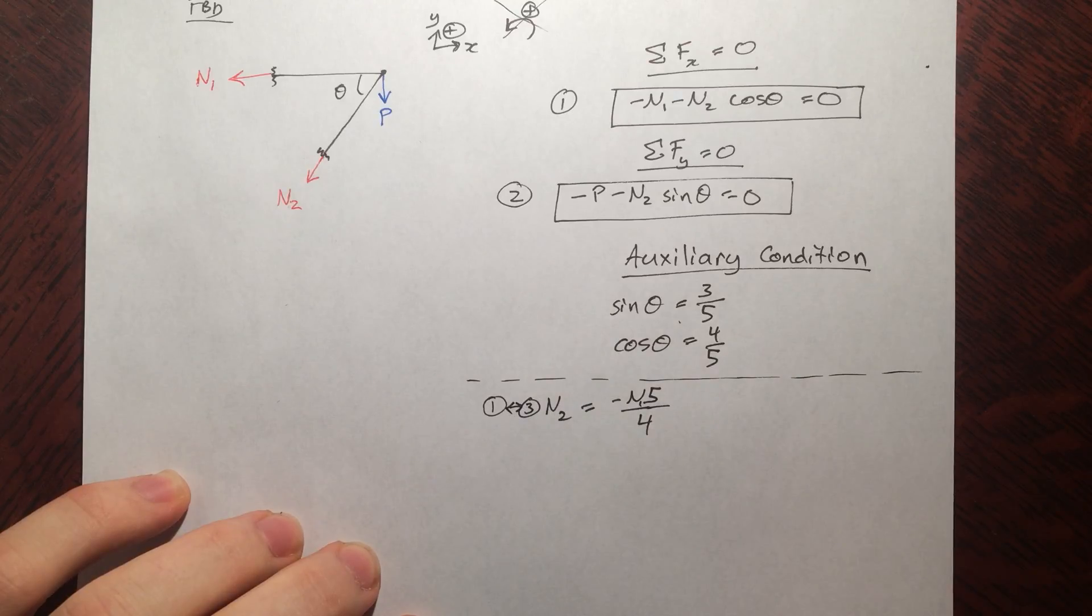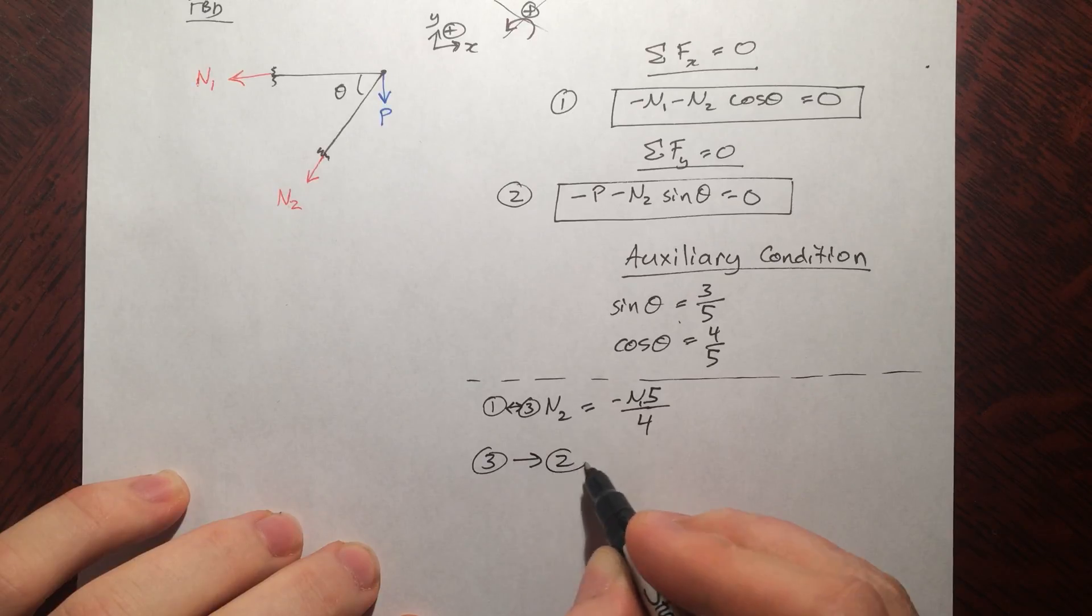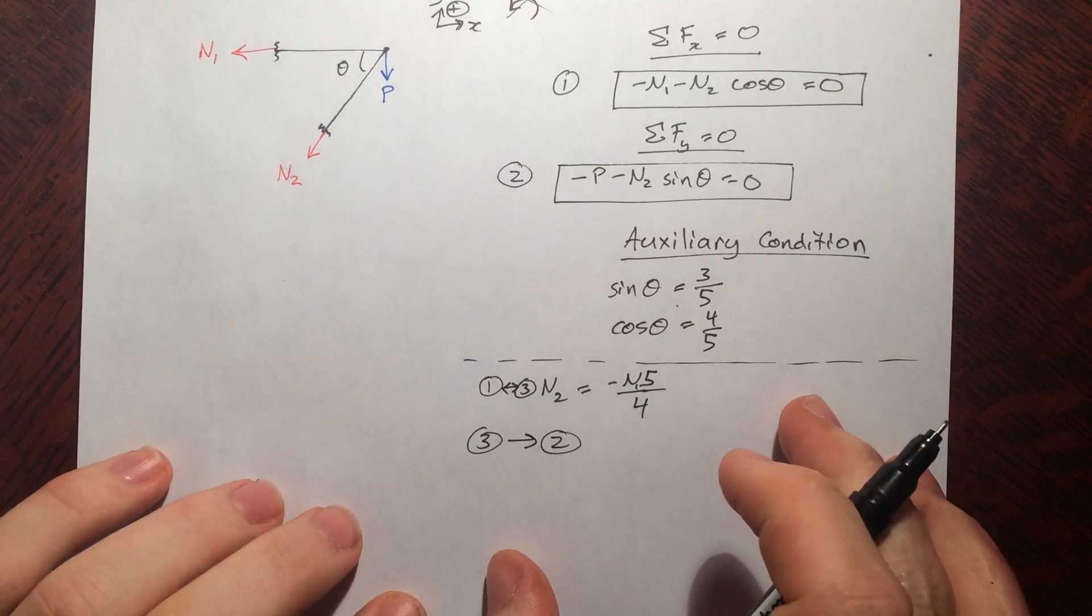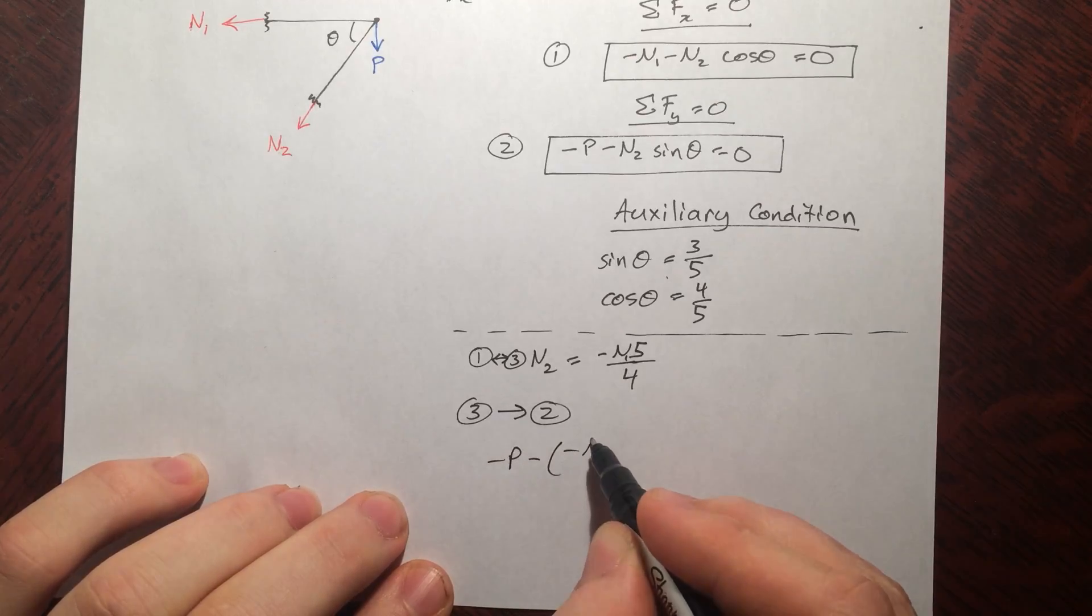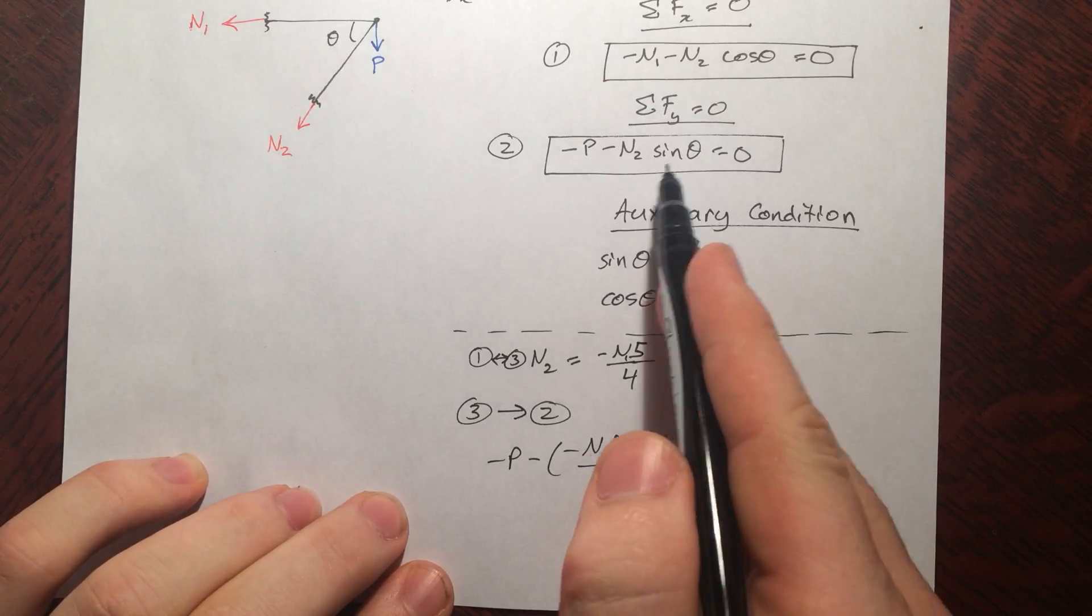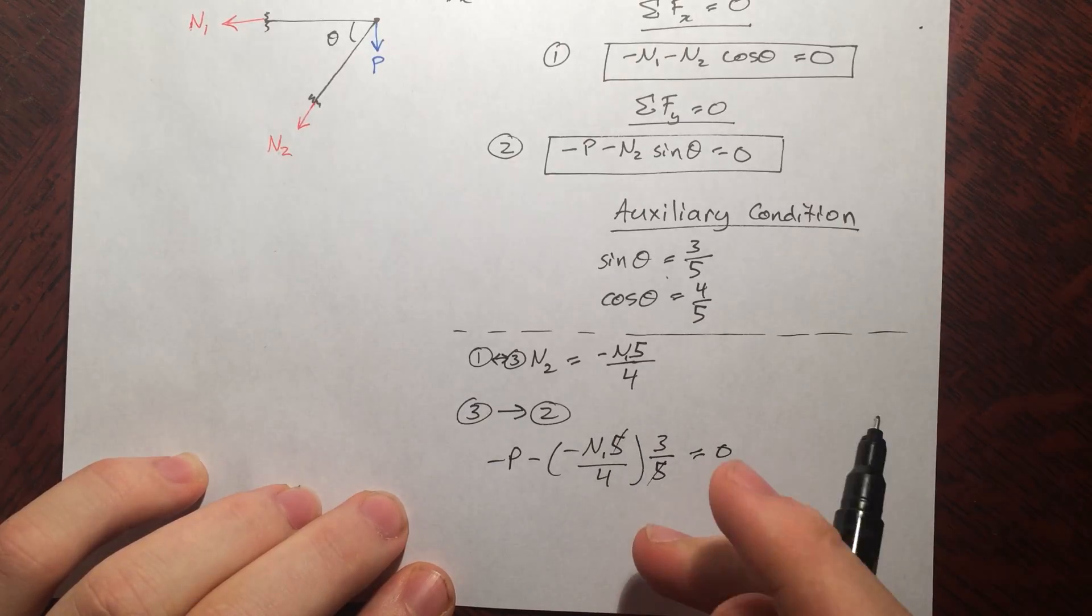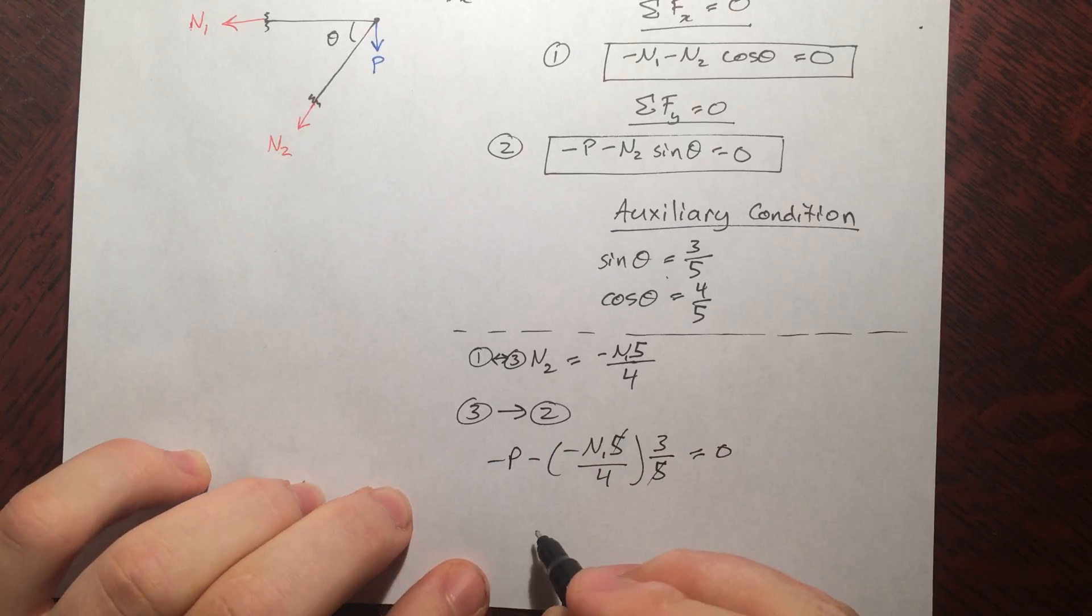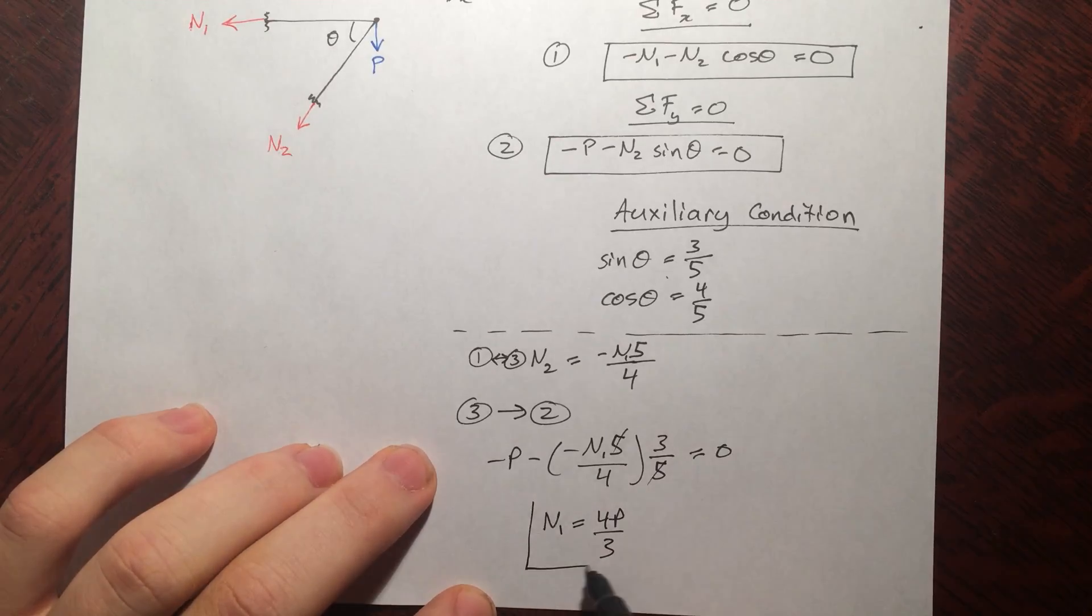Alright. And now I'm going to call this 3. Okay. So 1 went into 3. Now I'm going to take 3 and plug it into 2. Alright. So that's my notation for that. Then you get negative P minus this bit, times 3 fifths. That's the sine of theta. Equals 0. And you can solve. And all this cancels. You move N1 to the other side. Times it over. N1 equals 4P by 3. Okay. So box it off.